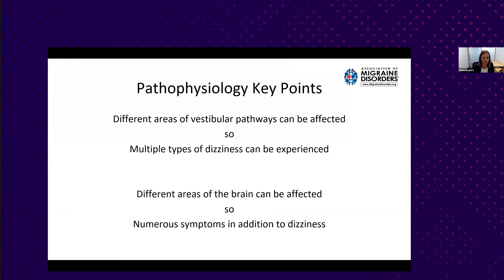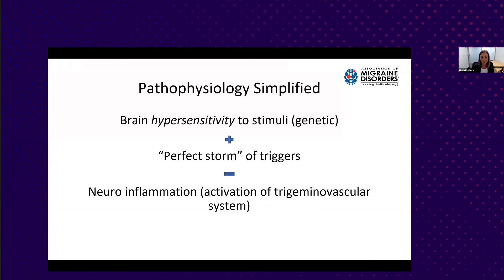The central vestibular pathways are really complex—they go to many different parts of the brain, so different areas can be affected. That's why patients get all different kinds of symptoms: it can be a spinning sensation, or just a vague sense of disequilibrium. Because multiple areas of the brain can be affected simultaneously, patients can get many different symptoms in addition to dizziness, making it really challenging to diagnose.